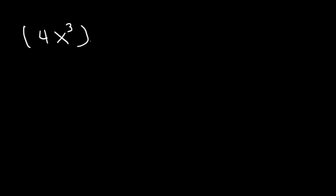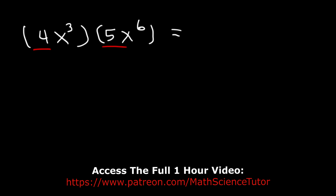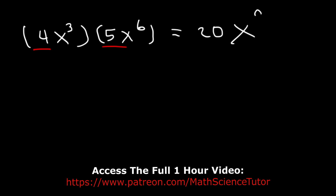So let's say if you want to multiply 4x cubed by 5x to the sixth. Let's multiply 4 times 5 — that's 20. And then we need to multiply x cubed times x to the sixth, which means we add 3 and 6 — that's 9. So the answer is 20x to the ninth.